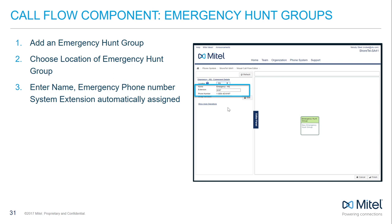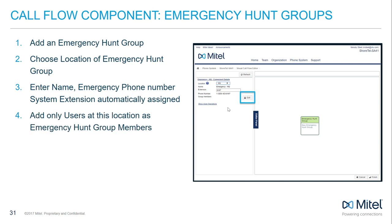The extension can be edited to an unused extension if needed. Adding group members works the same as with a regular hunt group. Keep in mind that only users located at this specific location should be assigned as members of this emergency hunt group, as its purpose is to allow emergency services to return calls to someone at the location from which the emergency call originated. Click Show More Operations if you need additional access to configuration options.